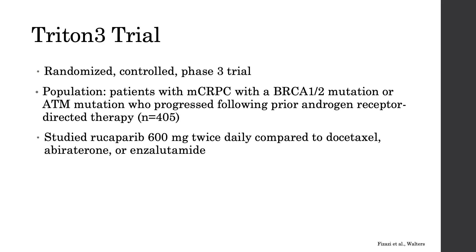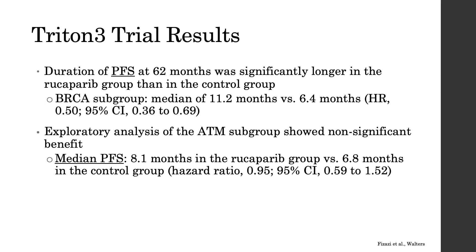The TRITON-3 trial focused on patients with metastatic castration-resistant prostate cancer with a BRCA1/2 or ATM mutation who progressed after androgen receptor-directed therapy. It studied rucaparib 600 mg twice daily compared to docetaxel, abiraterone, or enzalutamide. At 62 months, progression-free survival was significantly longer with rucaparib in the BRCA subgroup: 11.2 vs. 6.4 months. An exploratory analysis of the ATM subgroup showed modest but not significant benefit: 8.1 vs. 6.8 months.